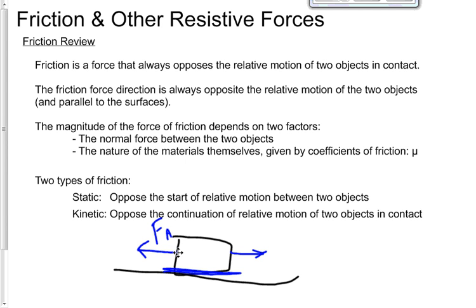The magnitude of the force of friction depends on two major factors: the normal force between the two objects and the nature of the materials themselves, given by the coefficients of friction μ. We have μs and μk. We'll talk about those in just a second.